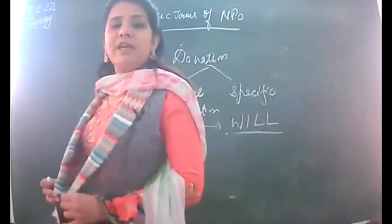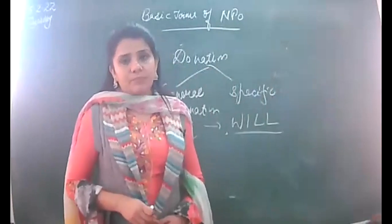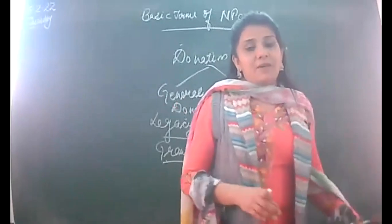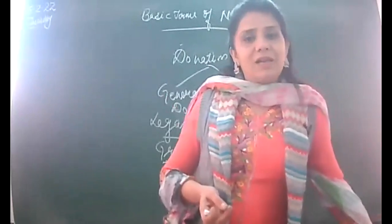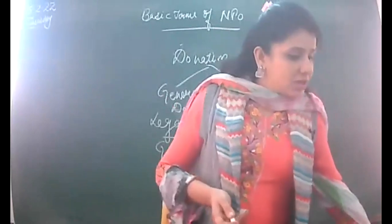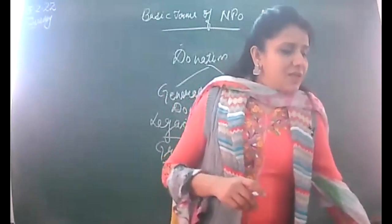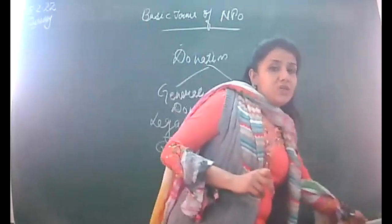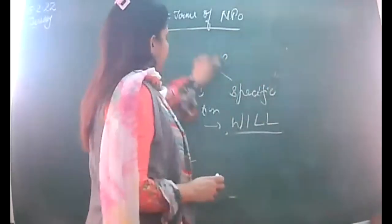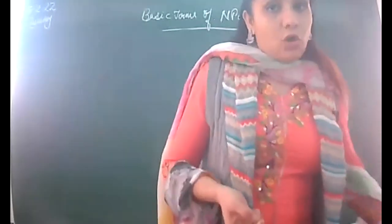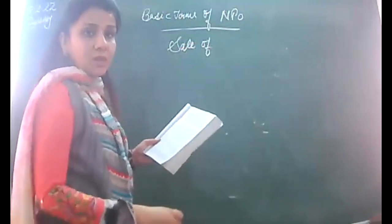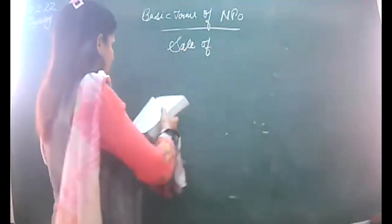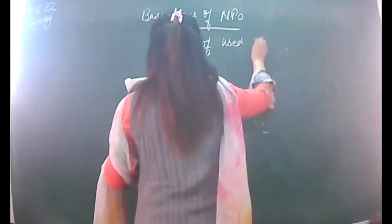The next topic is not meant for every type of NPO—it is basically for sports clubs. They will have sports material, and in the question you may be given sports material purchases along with opening and closing balances, so you are supposed to calculate sports material consumed. Our book also covers sale of used sports material, which happens only in some sports clubs running course-related activities.